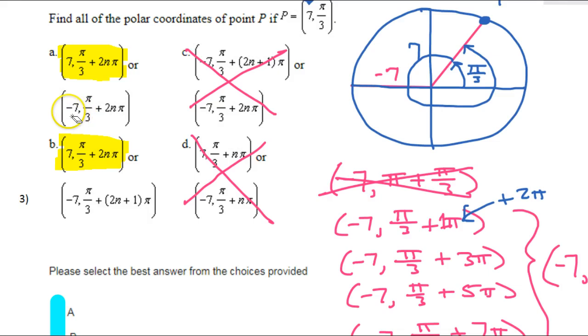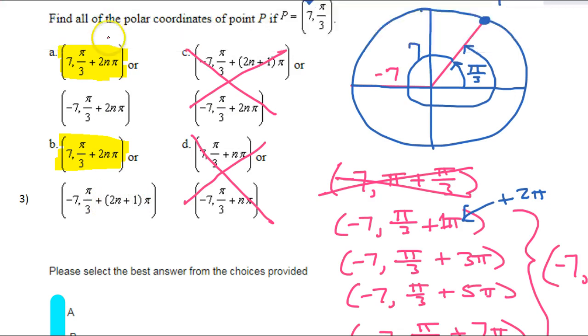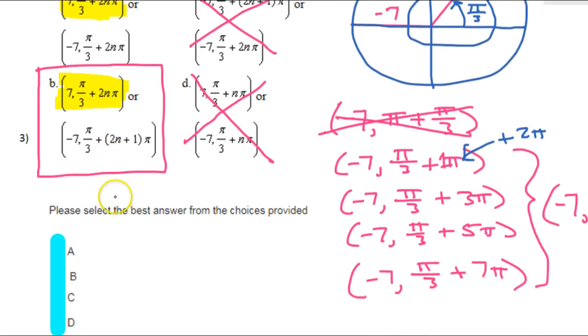So, looking at our two remaining choices, so with negative 7, we have pi over 3 plus 2n pi. That's going to be even numbers, right? Or, if I have negative 7 comma pi over 3 plus 2n plus 1 pi, that's the odd numbers. So, that tells us that this is the option that we're looking for. This is the one that fits. So, the answer is b.